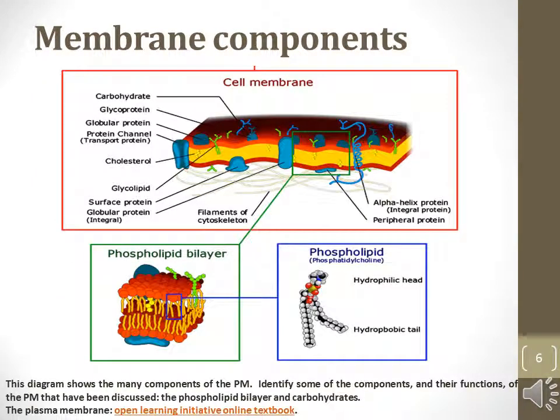This diagram shows the phospholipid bilayer with tails oriented toward each other, as well as different types of proteins and carbohydrates bound in the plasma membrane.